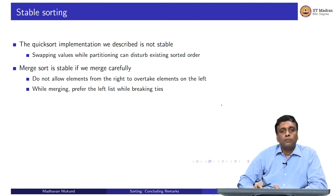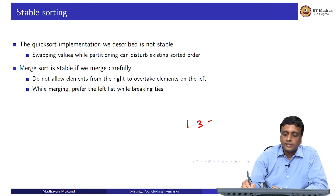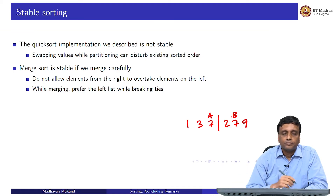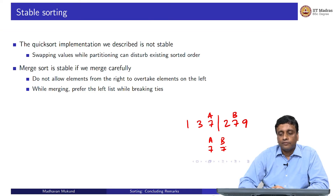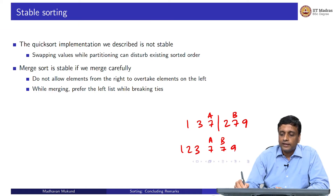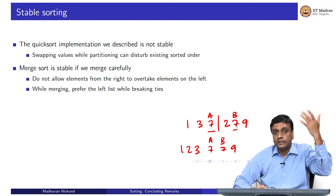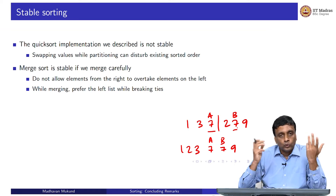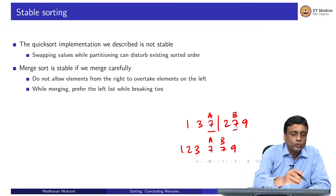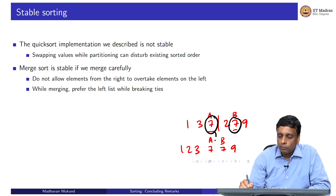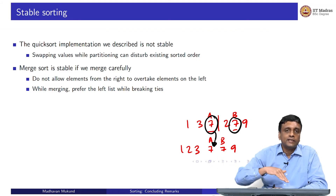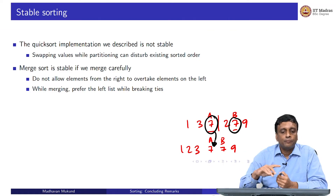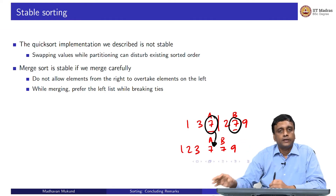Merge sort is easier to make stable. Basically, what you want to make sure is that when merging, say 1, 3, 7 with 2, 7, 9 — maybe one 7 had an A and the other a B with it — in the final list, the A7 comes before the B7. Stability means the final list is 1, 2, 3, 7, 7, 9, and the order of the two 7s should be the same order in which they were presented to you originally. You should not have 7B followed by 7A even though A and B are not part of the current sorting. In merge, if you see the same value on both sides, move the one from the left first — the value from the right should not overtake the value on the left. If you guarantee that your merge prefers the left list when comparing equal values, then you will get a stable merge.